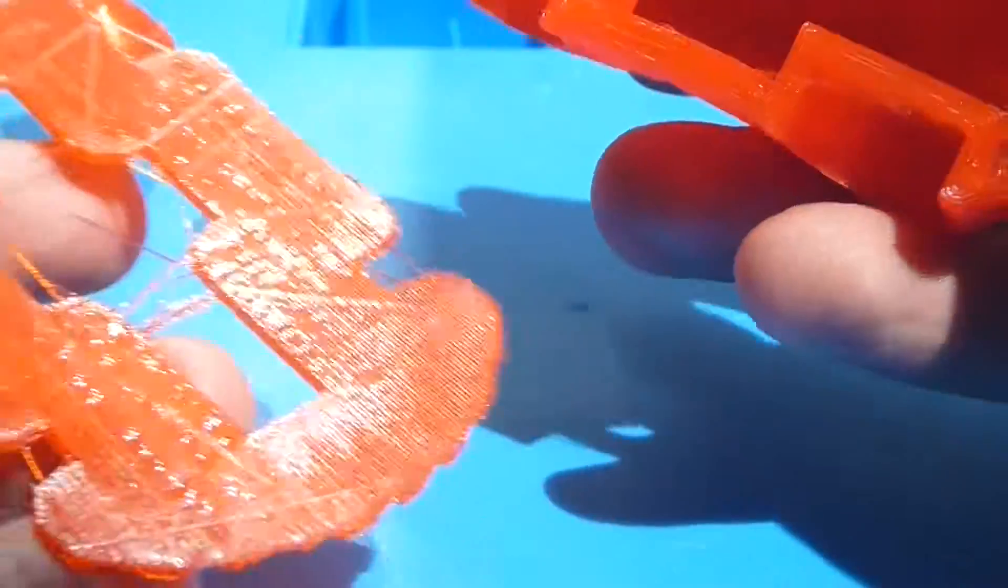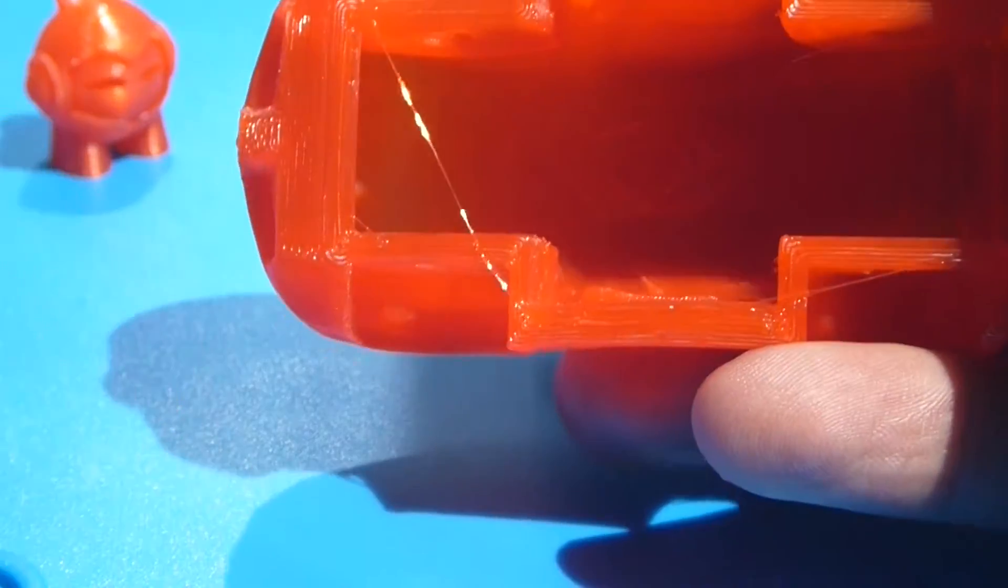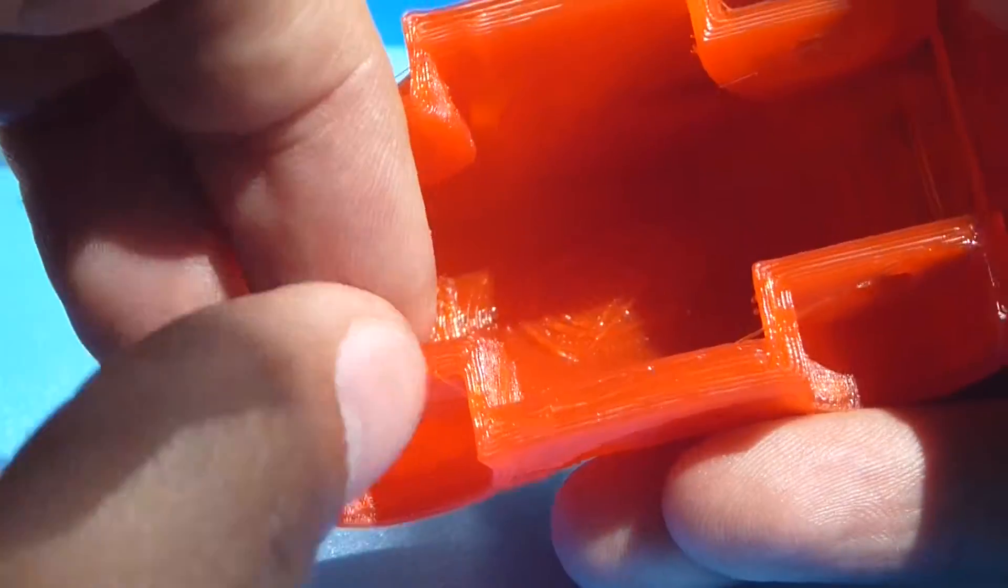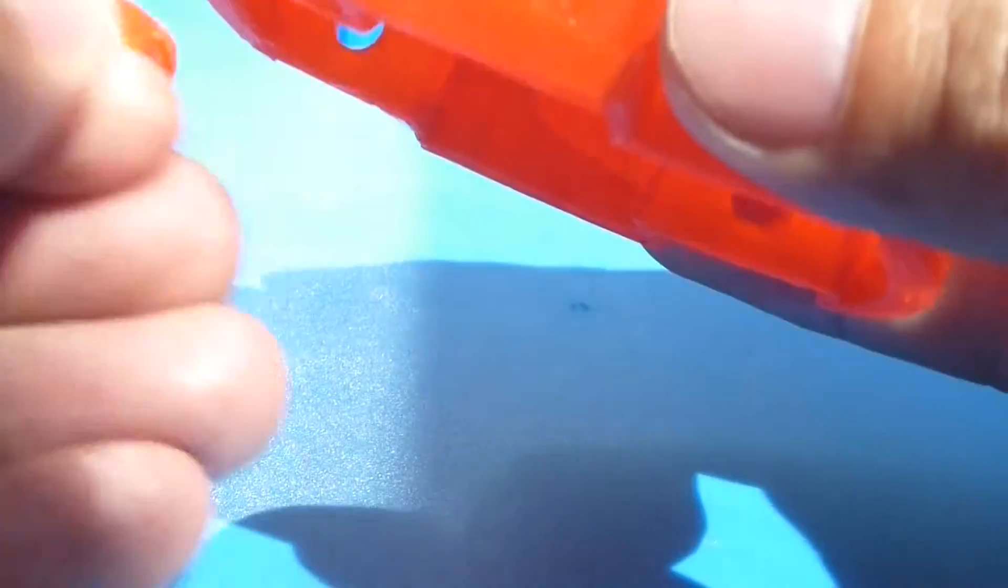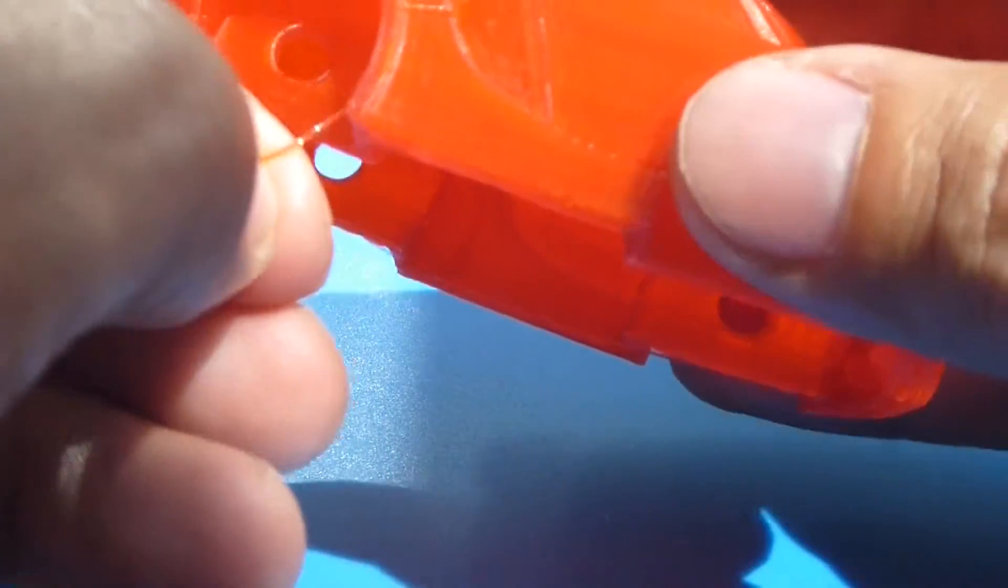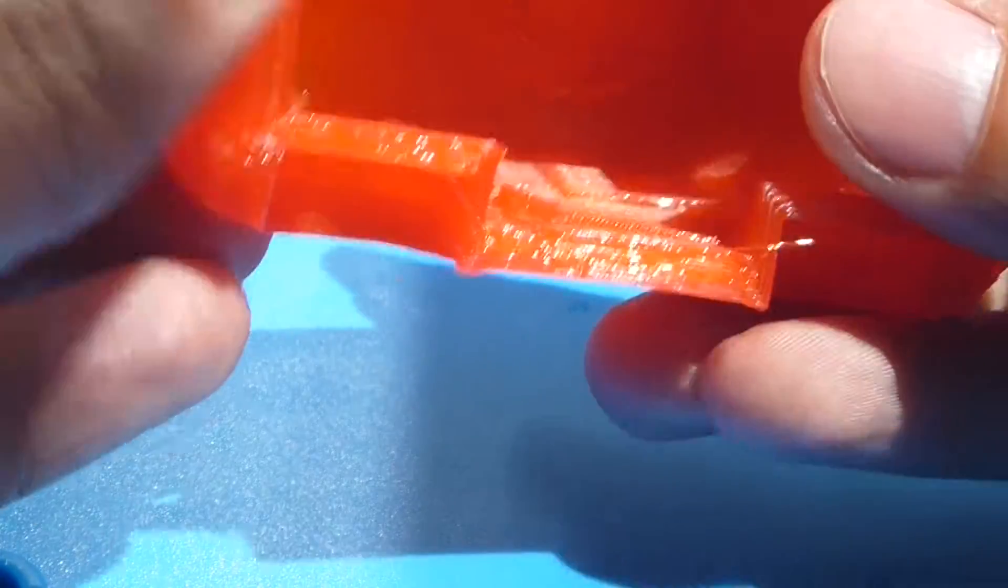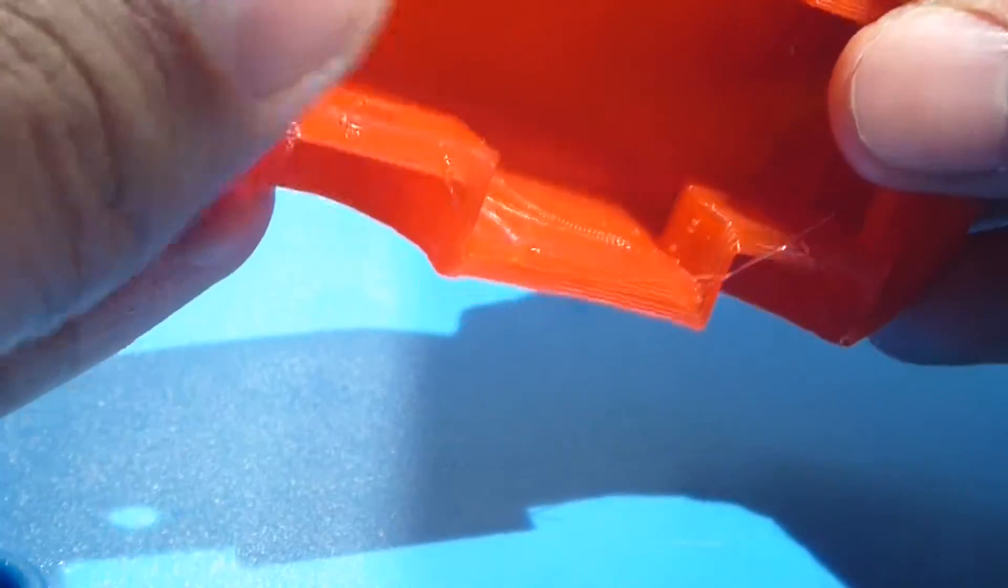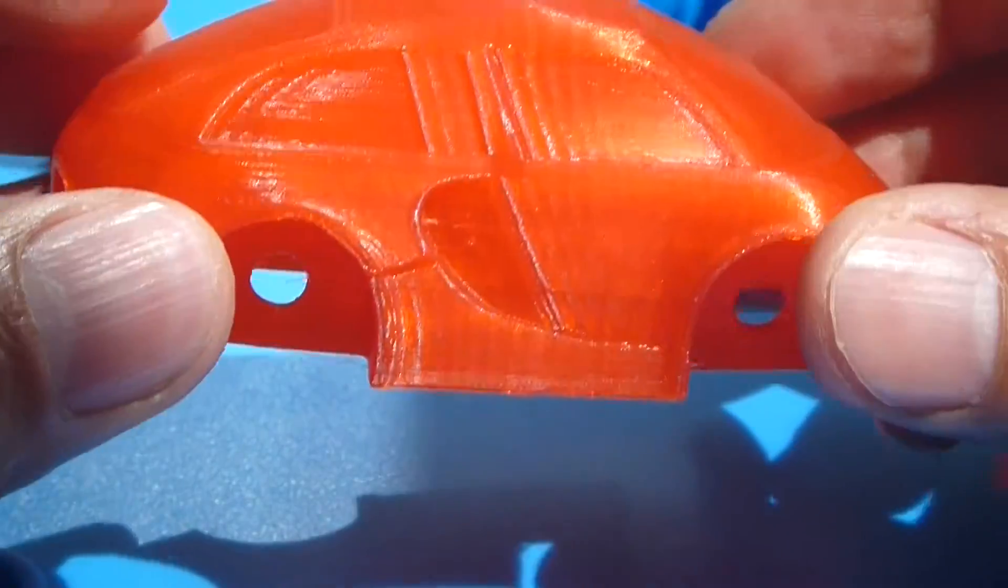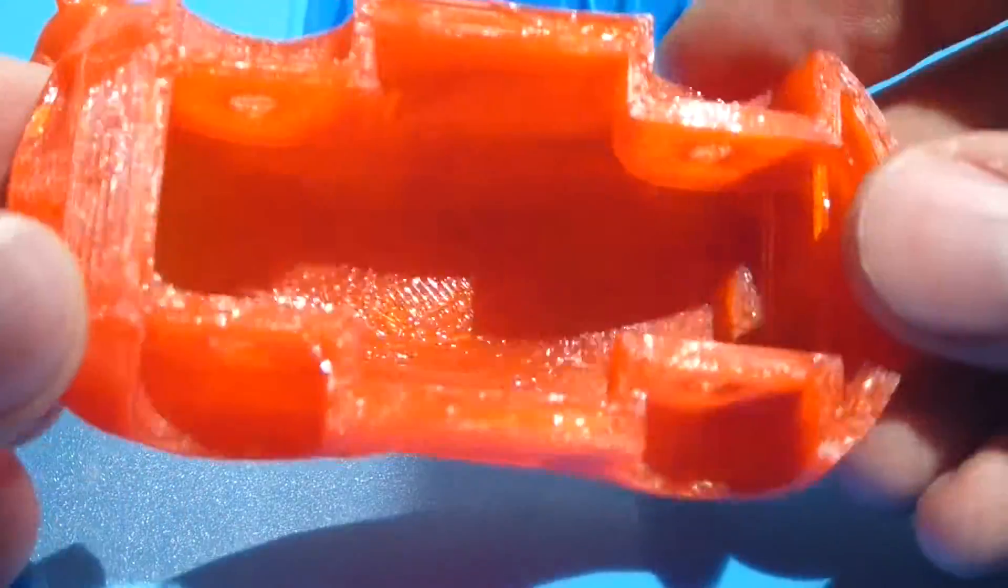When I was doing stuff with my other printers, I could never get it off this easy. Usually the support material would get stuck onto the model so hard that it would actually ruin the model. I tried my best not to use support materials, but with this you don't really get that problem.